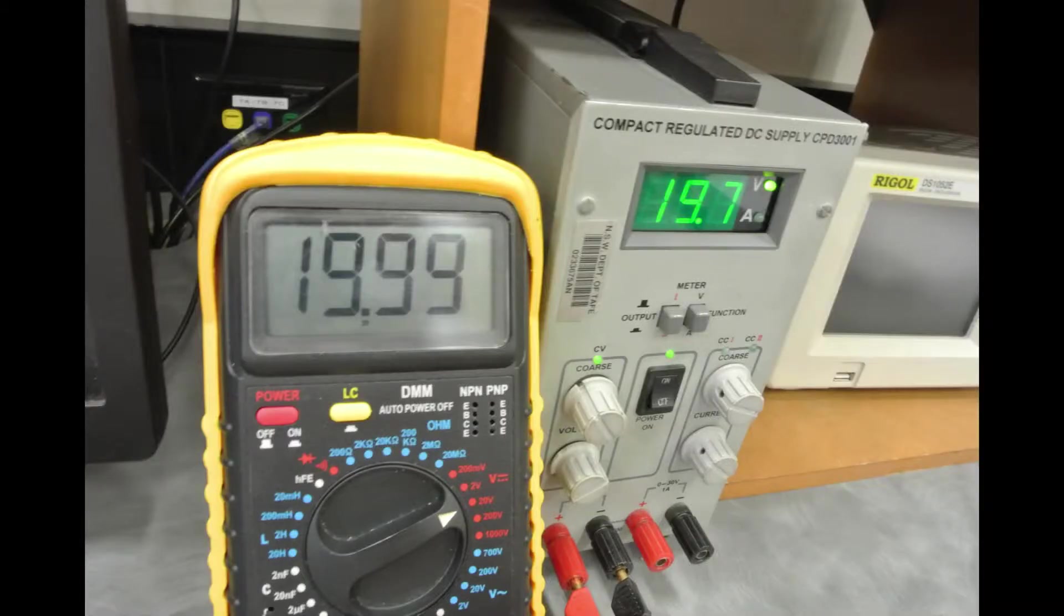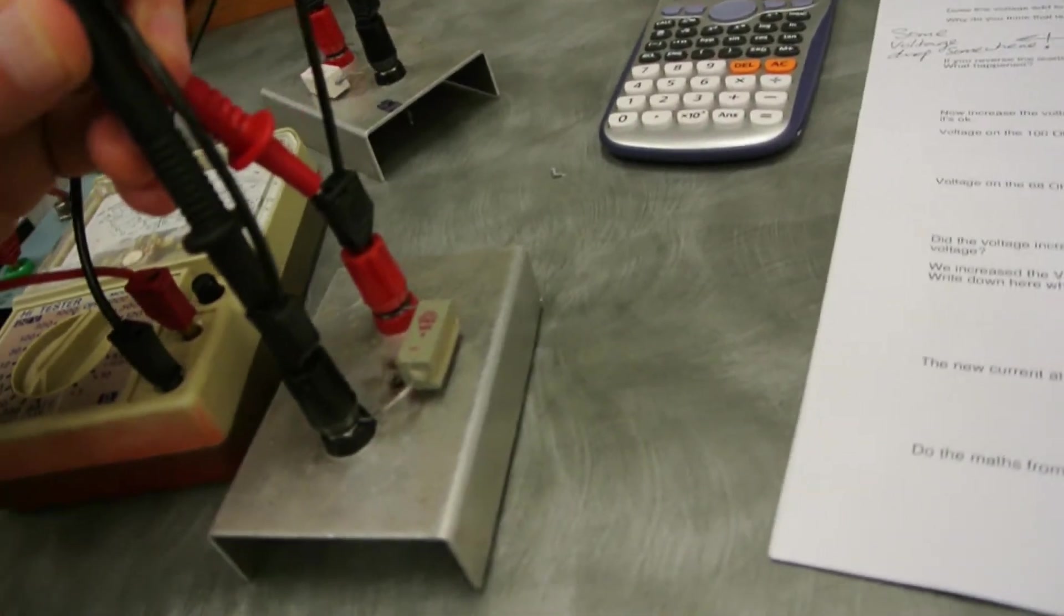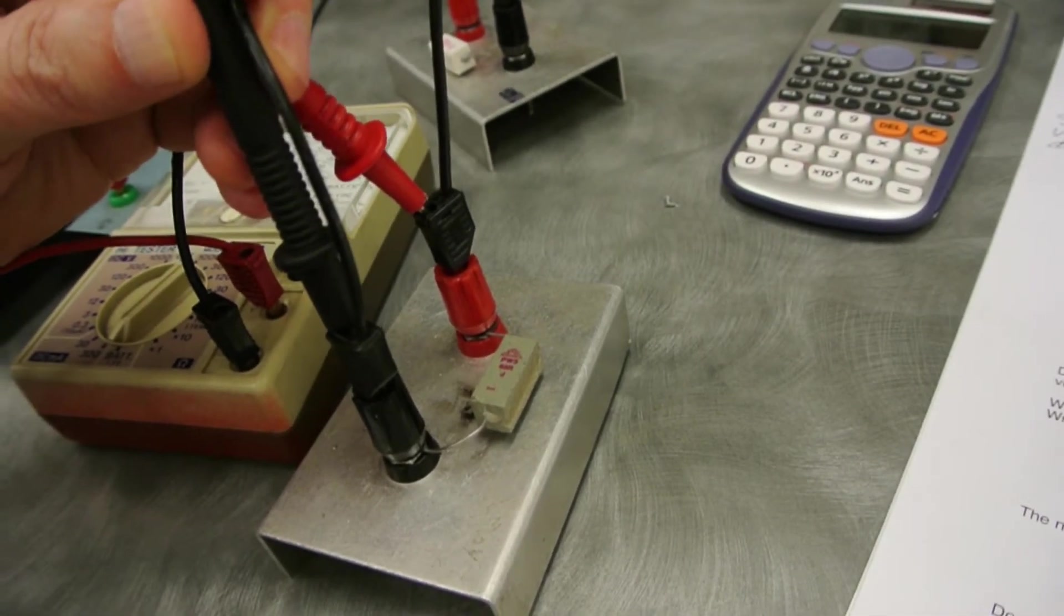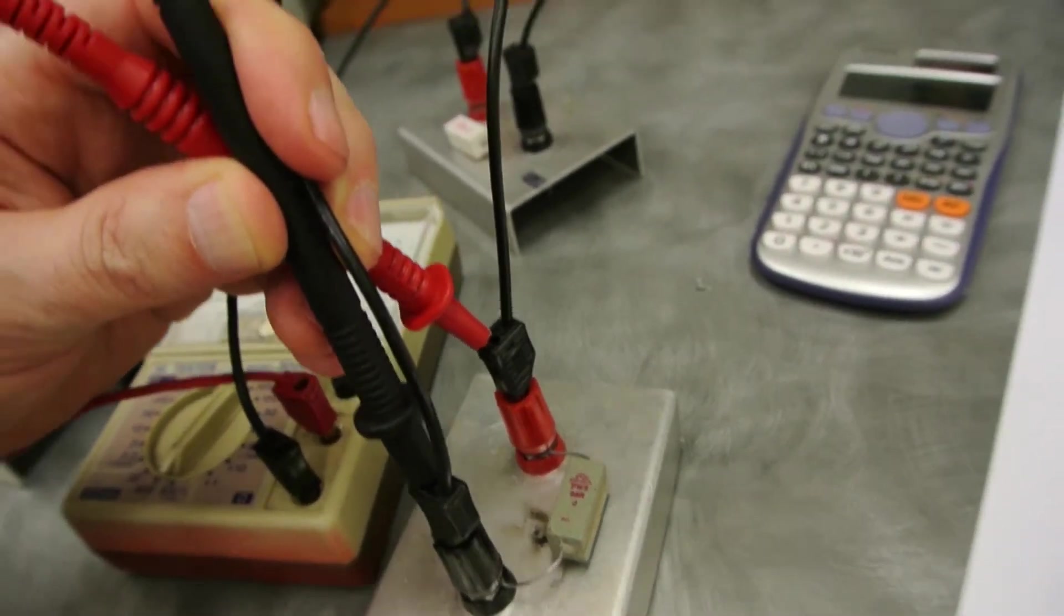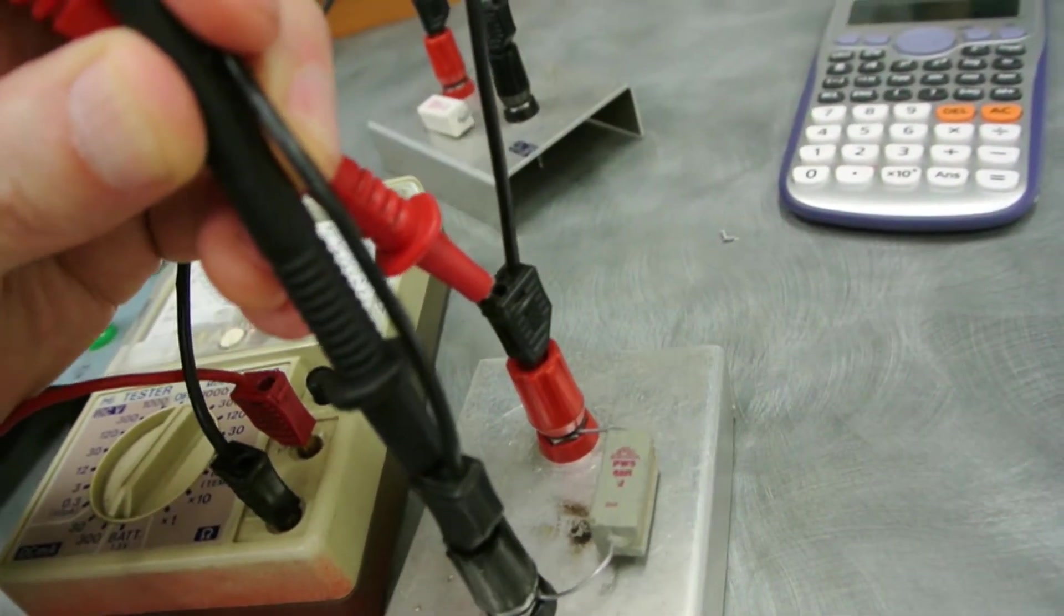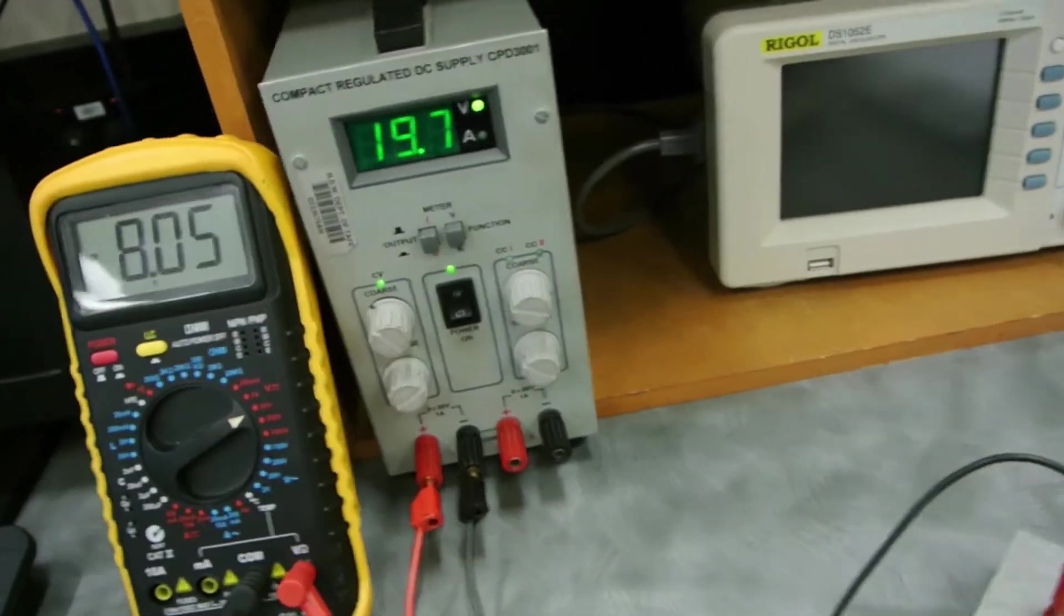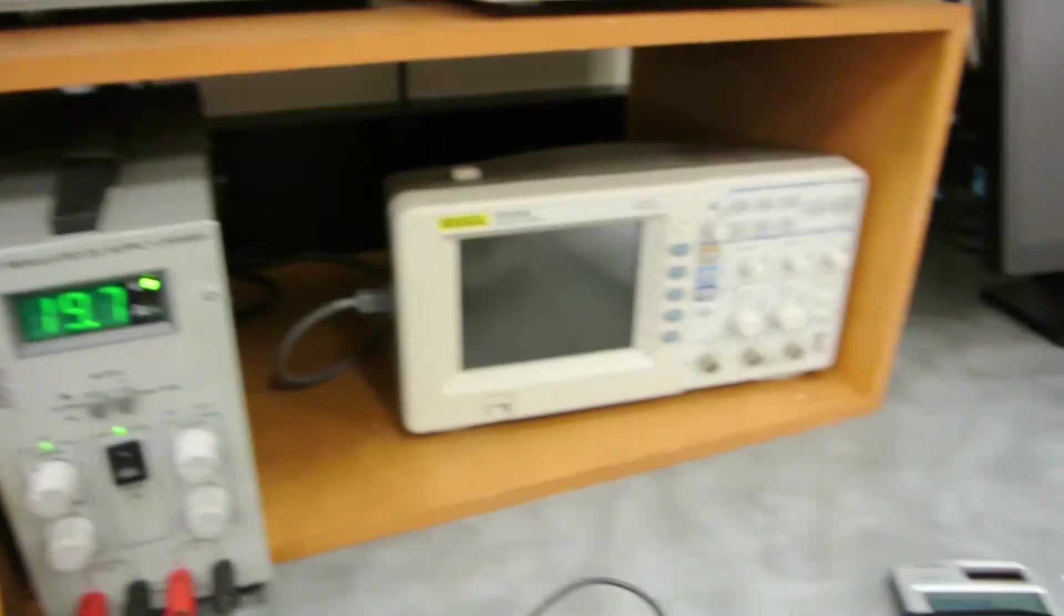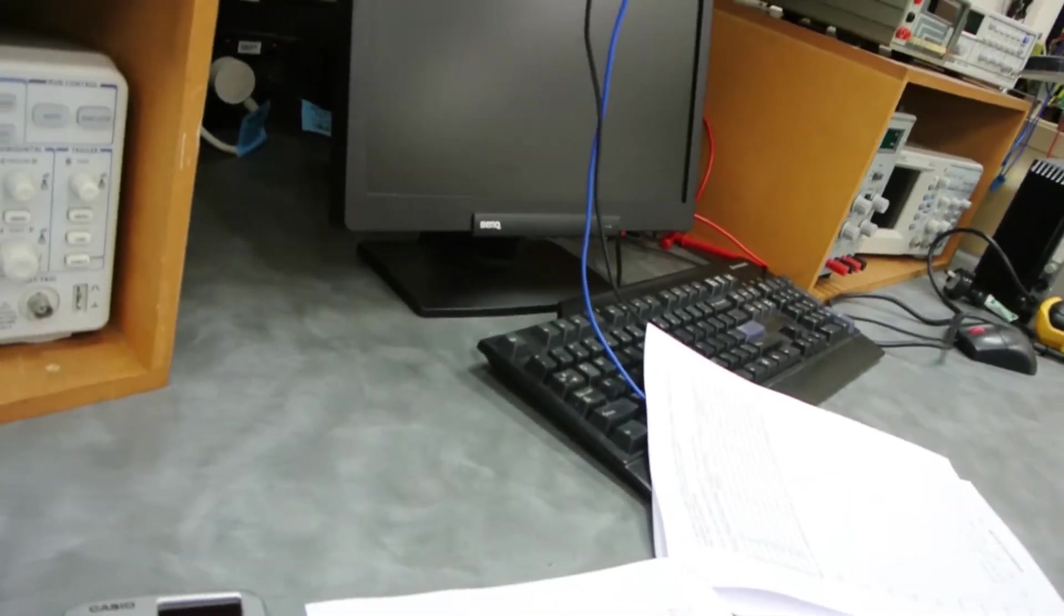The next part of the lab requires that we adjust the supply voltage to the circuit from 15 volts up to 20 volts. Now I'm measuring the 68-ohm resistor voltage. Notice I've got the leads around incorrectly there, but the meter will still read the right voltage, and I'm reading 8.0 volts across that.